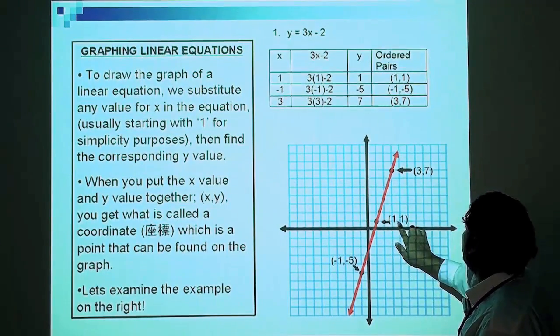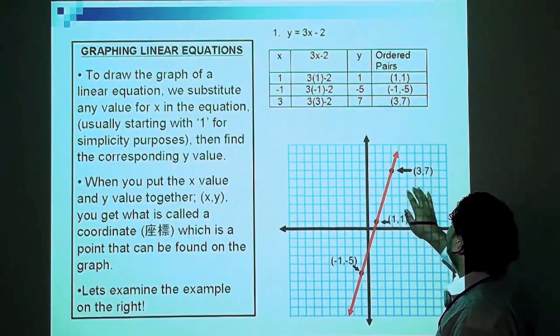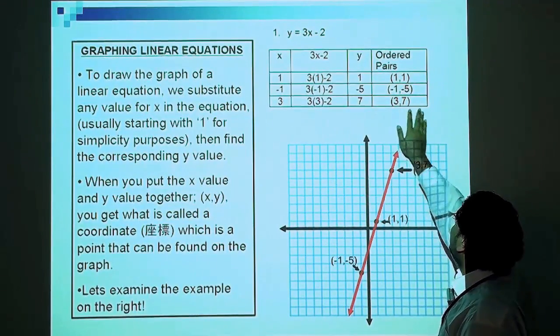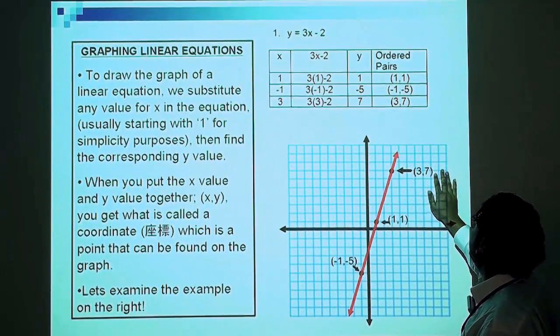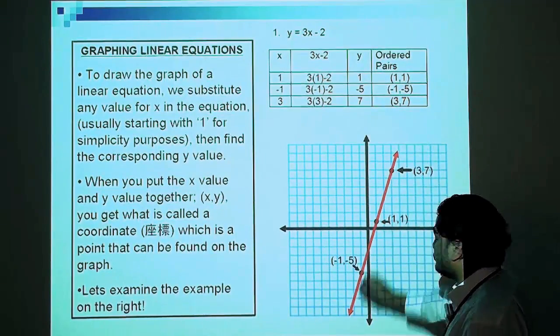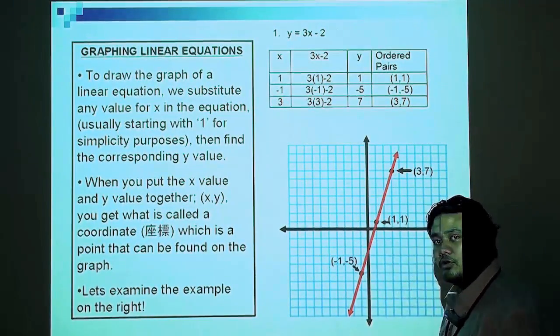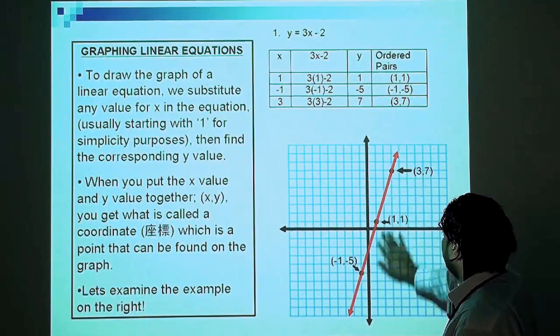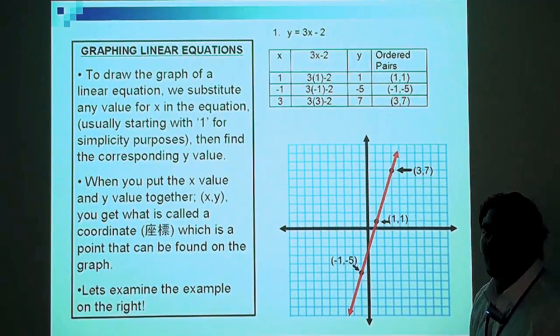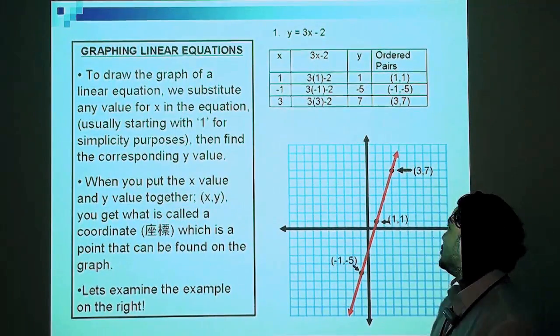One point here we have (1,1). Another point we have (-1,-5). And this third point (3,7). So when we draw these points on a graph, you can rule a straight line crossing all the points. And this line will be the line for the equation y equals 3x minus 2.